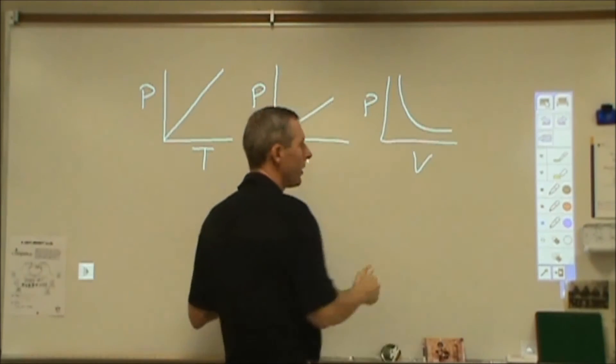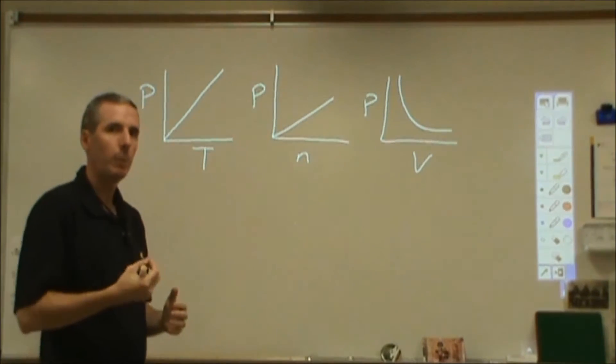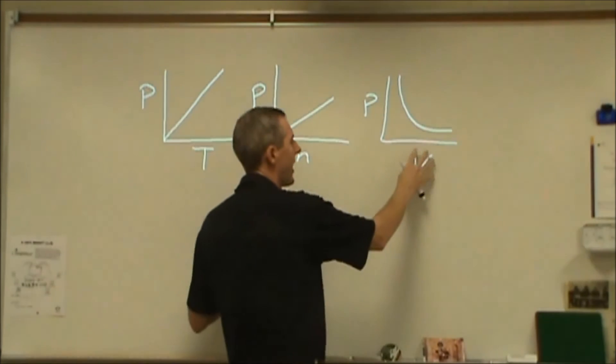Pressure and volume, on the other hand, are inversely proportional, but they are proportional in that inverse relationship. So if I half the volume, my pressure will double. If I third of my volume, my pressure will triple. If I double my volume, my pressure will half.